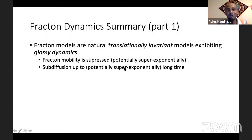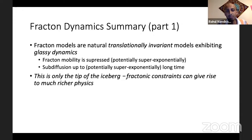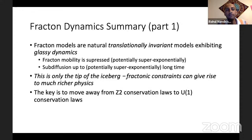So this is essentially the warm-up act. Now, you have these fracton models — especially these stabilizer code models — they're translationally invariant, exactly solvable. They have these nice properties that the mobility of the elementary excitations is suppressed, potentially super-exponentially fast in temperature. But at the end of the day, everything is still ergodic. You sort of wait long enough, things go to thermal equilibrium. Now we come to the real part of the talk: if you take inspiration from what we learned from fractons, you can find much richer physics, including true ergodicity breaking. But to do that, you want to move away from these Z₂-type stabilizer code models to models with true U(1) conservation.